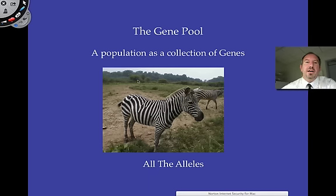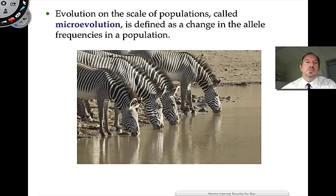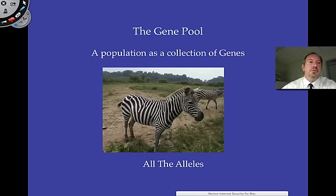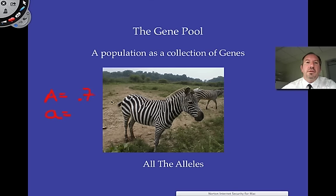A gene pool, when you think of it, is a collection of individuals — and when you look at just the genes, it's a collection of all the alleles for each particular gene you're studying. So for a population of zebra, it would be a collection of all the alleles in that population. For example, if there's big A and little a as the two alleles for a trait in my gene pool, and the frequency of big A is 70%, then little a would have to be 30%, because they have to add up to 100%. That's what we mean by allele frequency in the gene pool.